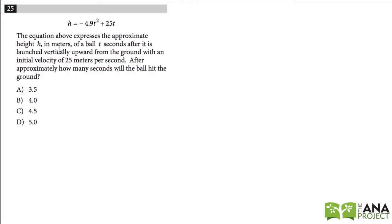The equation above expresses the approximate height h in meters of a ball t seconds after it is launched vertically upward from the ground with an initial velocity of 25 meters per second. After approximately how many seconds will the ball hit the ground?